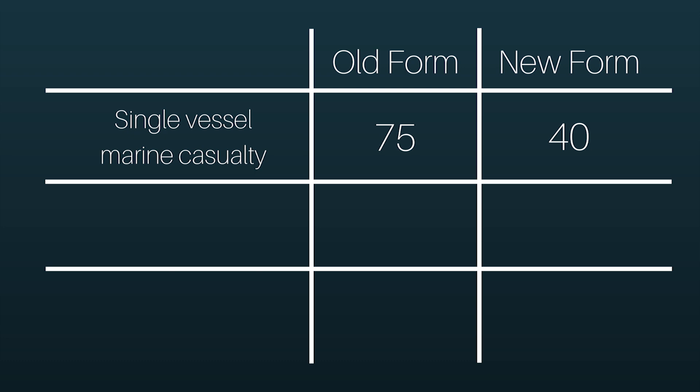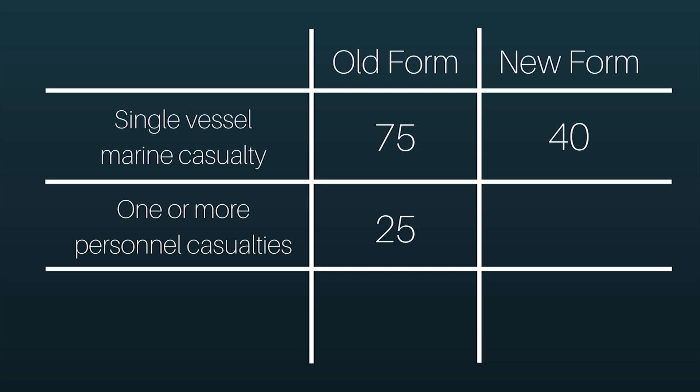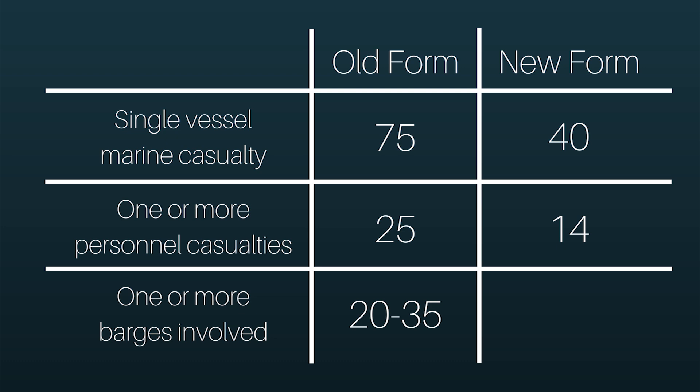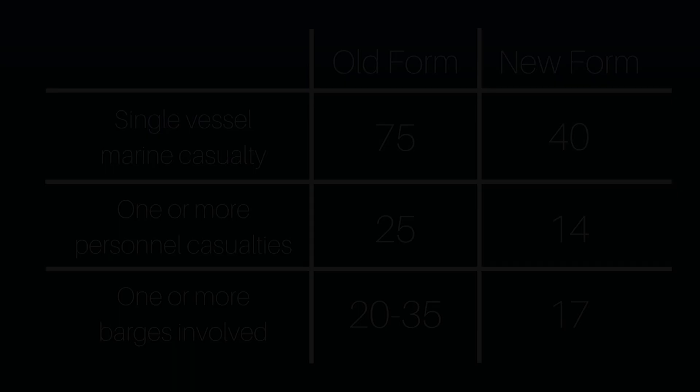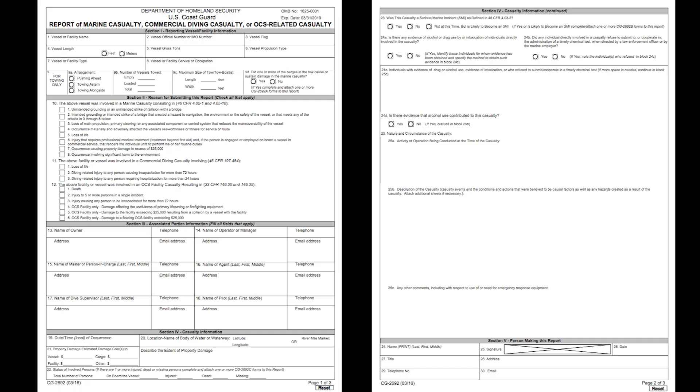If the incident involves one or more personnel casualties, there are only 14 additional data items to enter, as opposed to 25 on the old form. If the incident involves one or more barges, there are only 17 additional data items to include, as opposed to 20 to 35 on the old form.